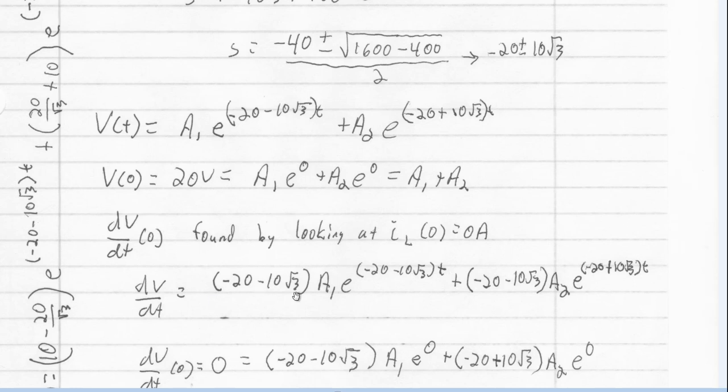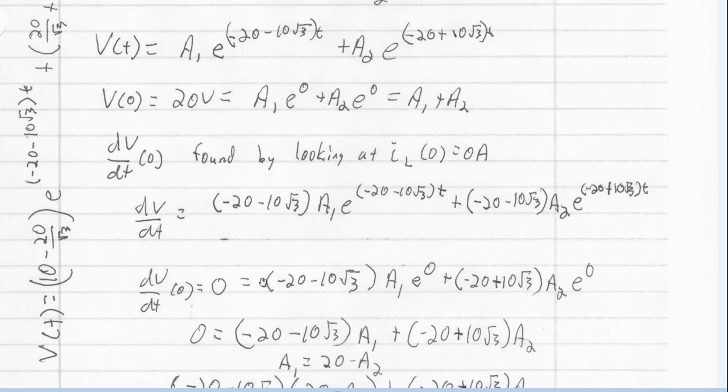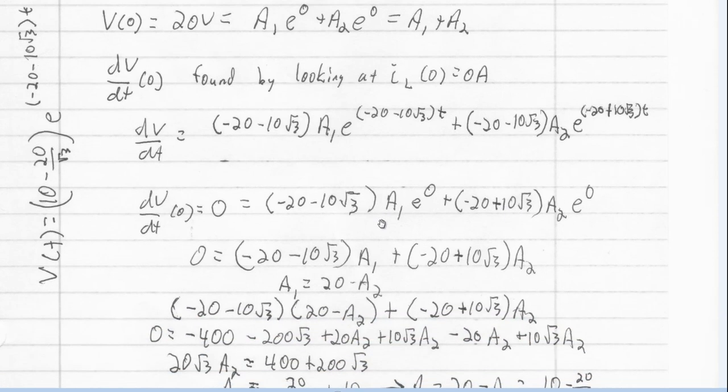So, since dV dt at zero is zero, let's go ahead and find dV dt using this. And so this is just going to be S1 A1 E to the S1T plus S2 A2 E to the S2T. And so we can solve that on down, and we get zero is equal to S1 A1 plus S2 A2. And so here, this is our S1, this is our S2.